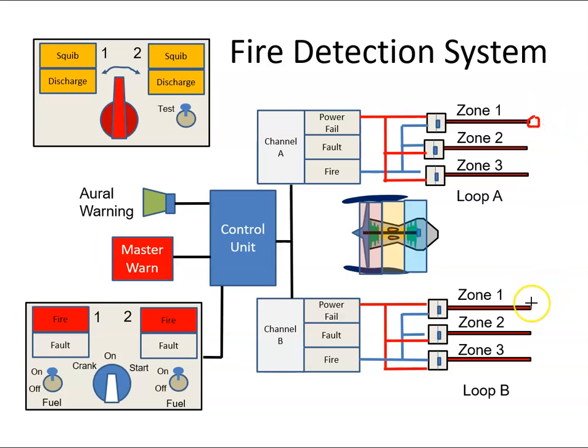We should also get a detection in Loop B. If we get a fire, what we want is an AND gate here, so we have a fire in Loop A and Loop B confirmed.